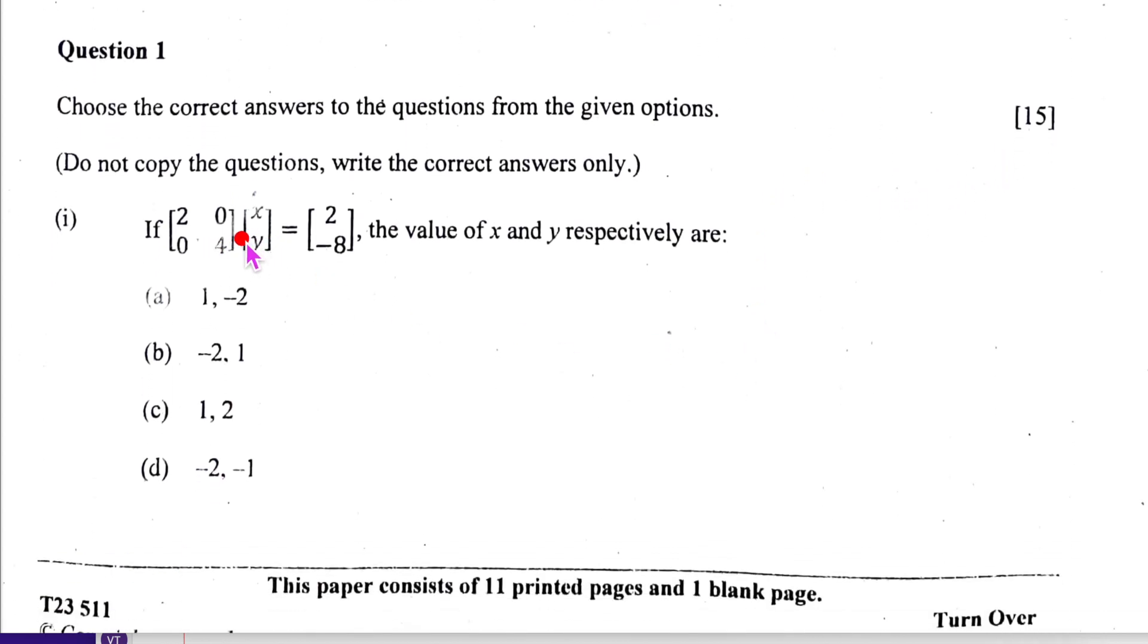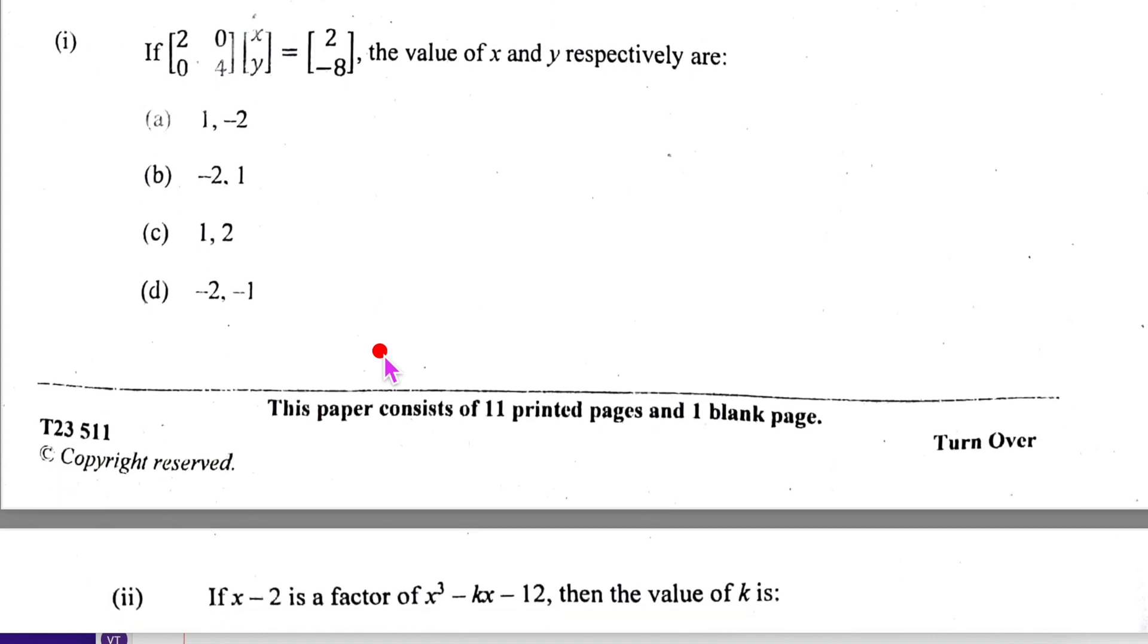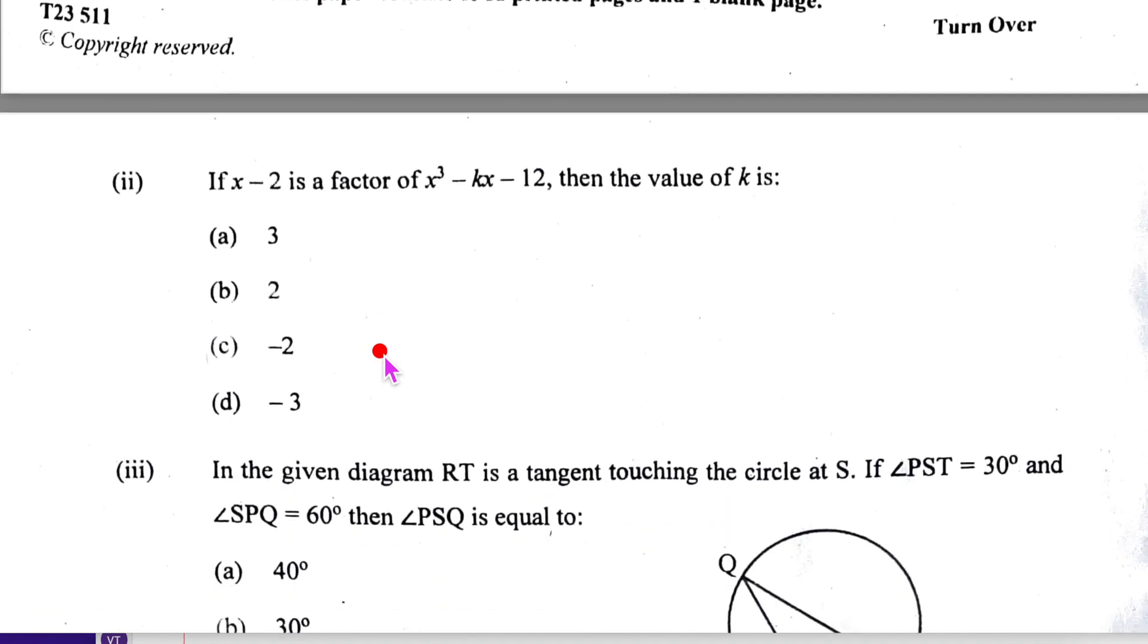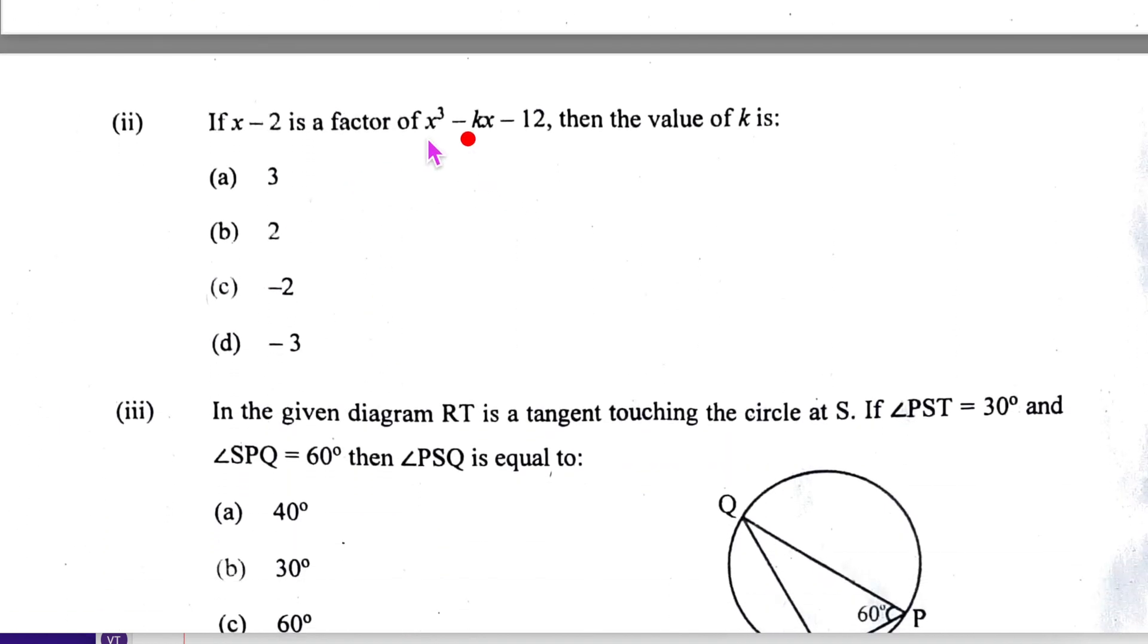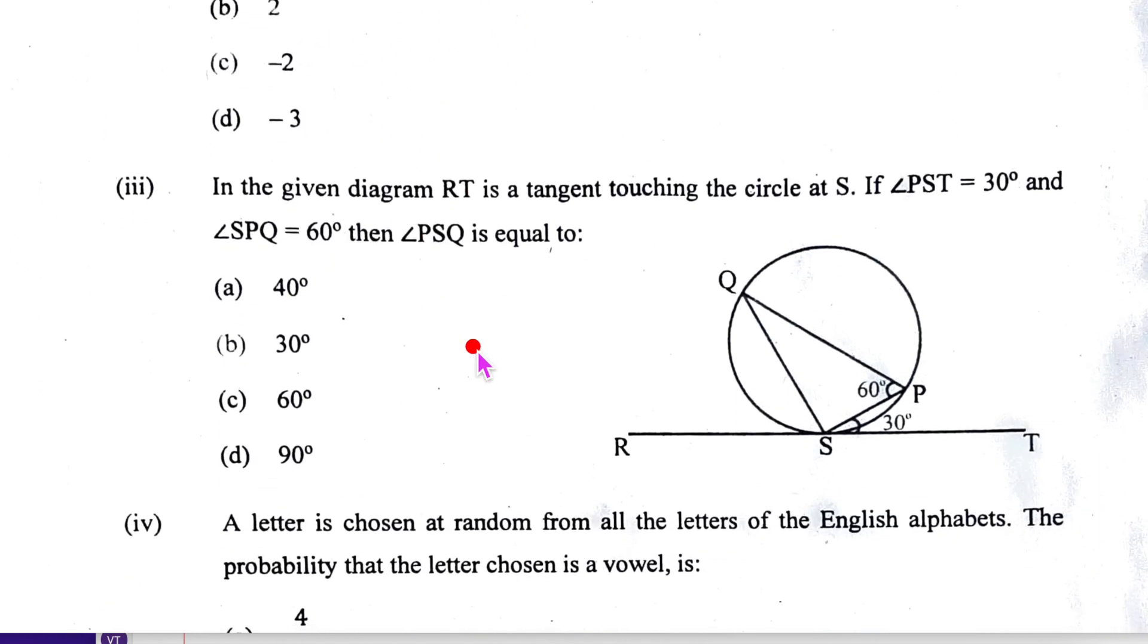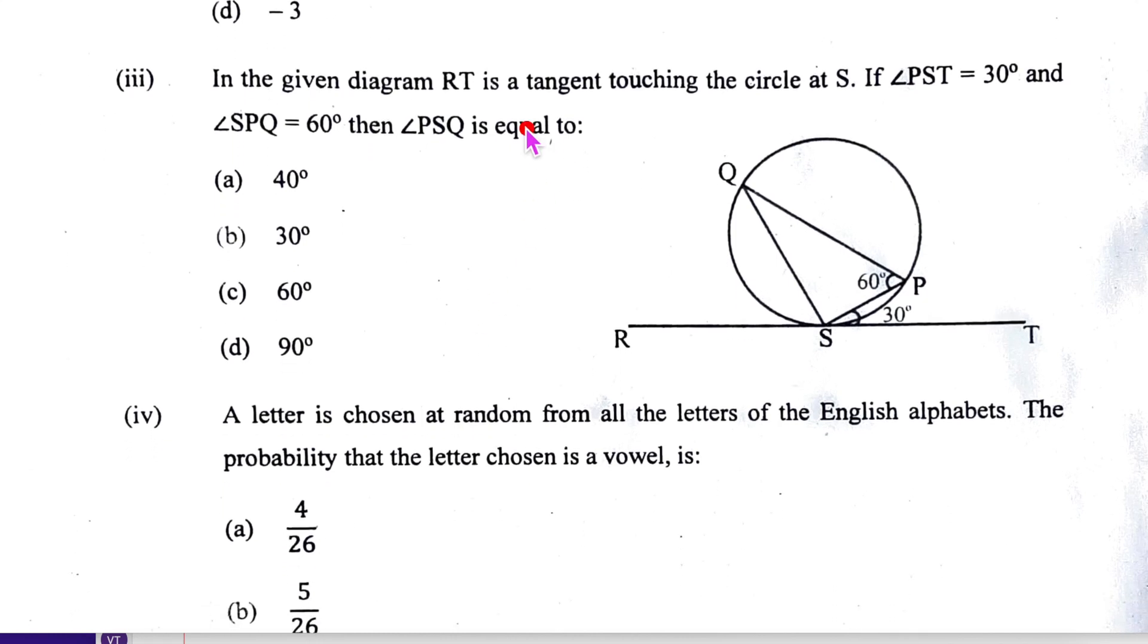Now here you have to multiply, working will be done this side. Not bad, this is pretty simple - x and y values. Let us look at the next one: x minus 2 is a factor, so you have to take x equal to 2 and substitute and get the values. This also simple enough.